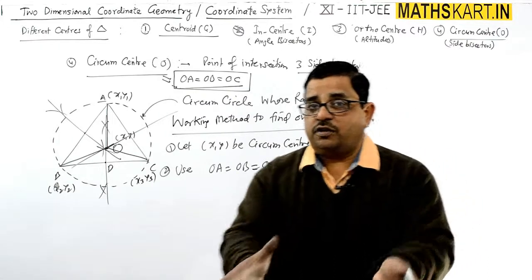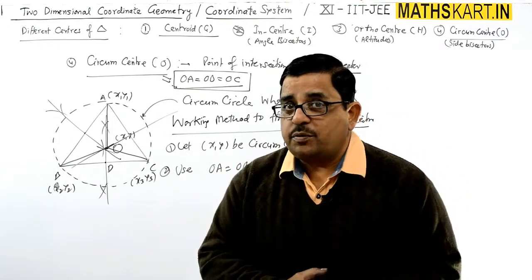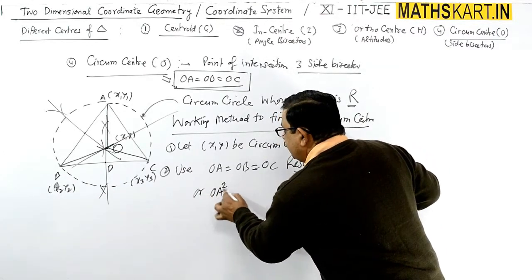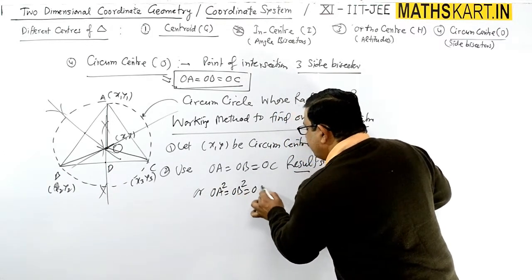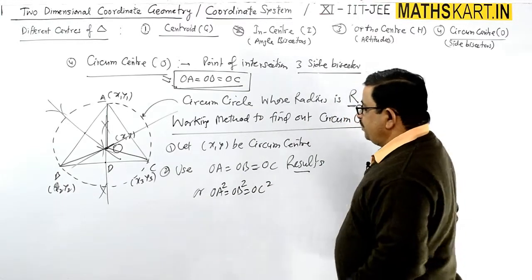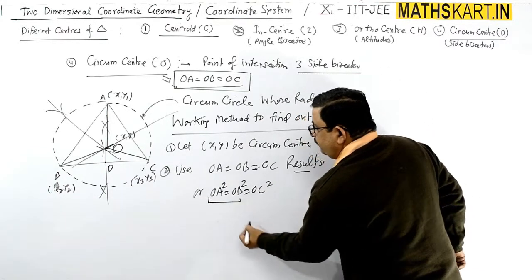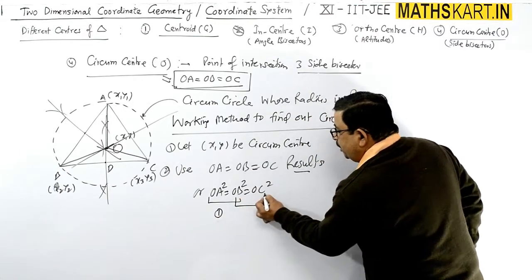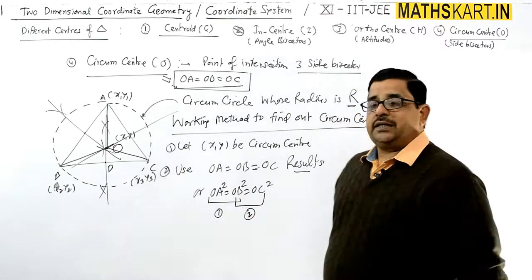Right, when you know all three vertices you can use the distance formula, you can square. You can use OA square equals to OB square equals to OC square. To ek baar jab aap is result ko iske saath equate karenge, usko equation one bol dena, aur OB square equals to OC square likh dena, usko equation second likh dena.